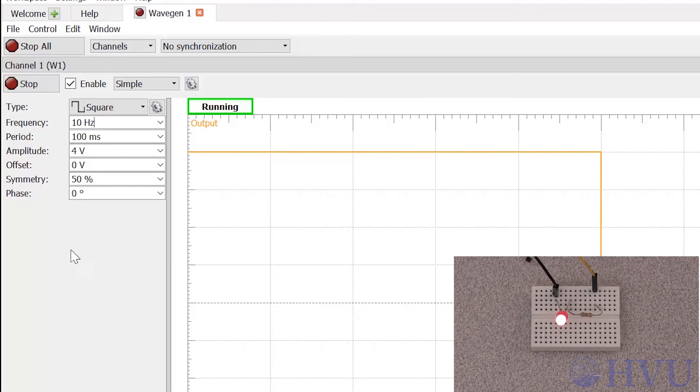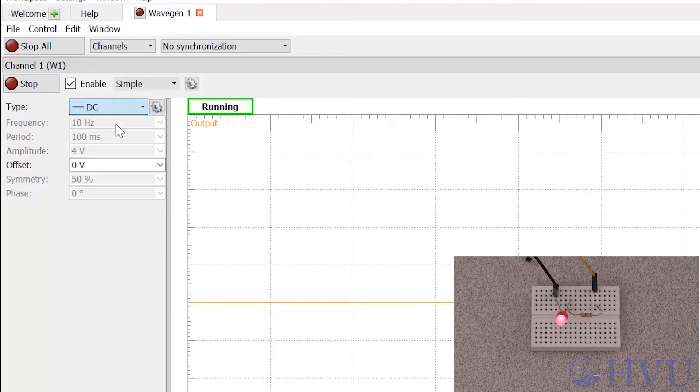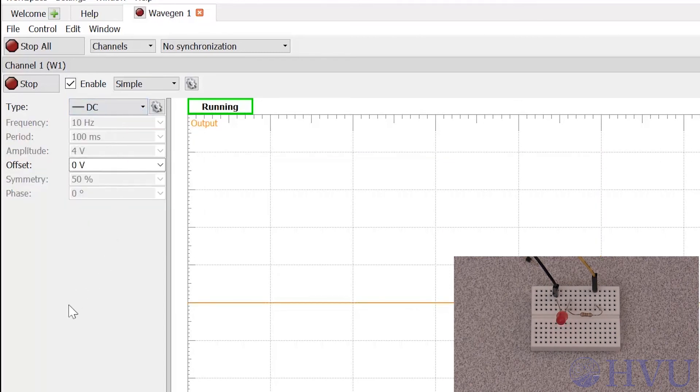You can use a constant voltage, DC, to check to see what voltage the LED first turns on. Just adjust the offset.